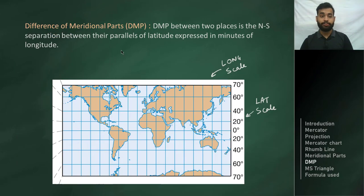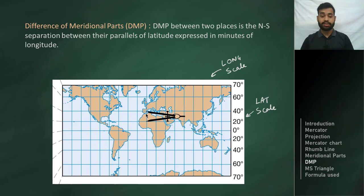Now let's see what Difference of Meridional Parts (DMP) means. The difference of meridional parts between two places is the north-south separation between their parallels of latitude, expressed in minutes of longitude. It is measured along the longitude scale of the chart, and since all meridional parts are already tabulated in Norie's Nautical Tables, we can look them up directly.